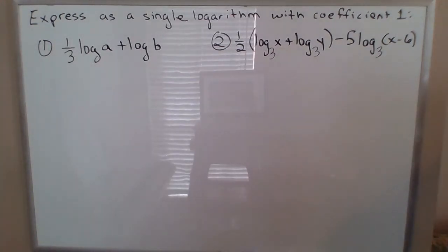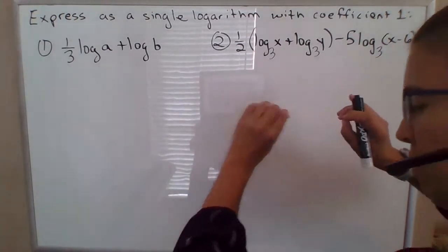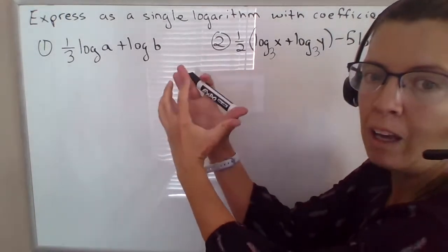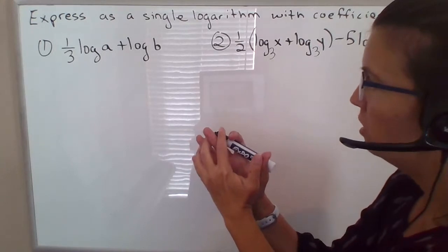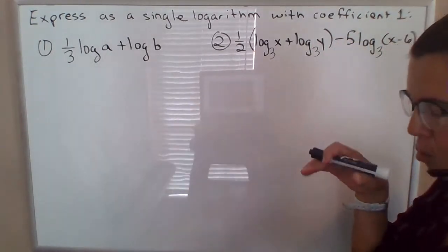Now I've got some examples where the goal is to go in the other direction. So instead of expanding a logarithmic expression out, now we want to fold it back up into one nice neat single logarithmic expression with a coefficient of 1. So with no number out front.